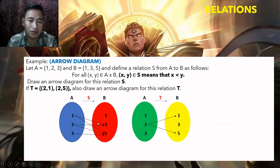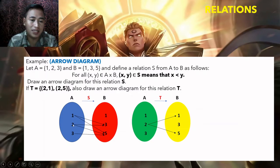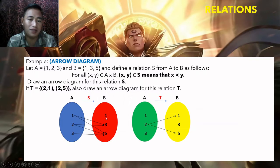For x = 2: 2 is less than 3 and 5, so pairs (2,3) and (2,5) are in S. For x = 3: 3 is only less than 5, so only the pair (3,5) is in S. Drawing the arrow diagram: 1 maps to 3 and 5; 2 maps to 3 and 5; 3 maps to 5 only.